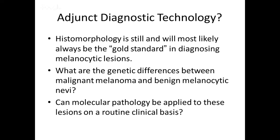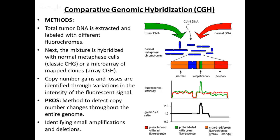How can we apply adjunct diagnostic technology to confirm our assumptions about tumor behavior based on histomorphology? Histomorphology will still, and most likely always will, be the gold standard in diagnosing melanocytic lesions. But what are the genetic differences between malignant melanoma and benign nevi, and can molecular pathology be applied to these lesions on a routine clinical basis? Let's do a quick review on CGH and FISH — how they work, pros and cons.